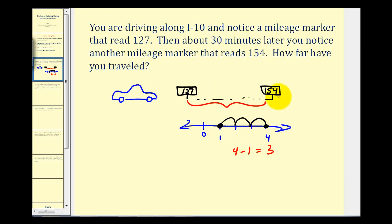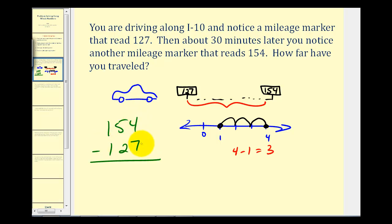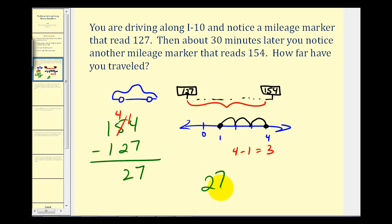So going back to our problem, we want to subtract one hundred twenty-seven from one hundred fifty-four. We'll set this up vertically: one hundred fifty-four minus one hundred twenty-seven. Starting on the right side, four minus seven — we can't do that because four is too small, so we'll borrow from the five. This becomes four, and we add ten to the ones column, giving us fourteen minus seven equals seven. Four minus two is two. One minus one is zero. So your car has traveled twenty-seven miles.